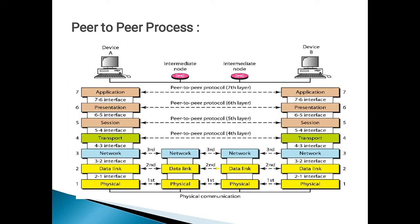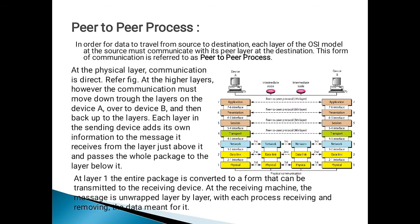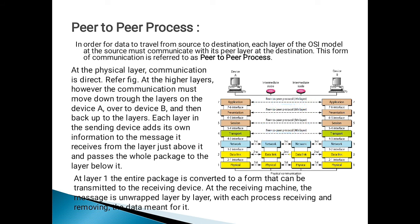Peer-to-peer process: what is a peer-to-peer process? This is a pictorial representation of the peer-to-peer process. When data travels from source to destination, each layer of the OSI model at the source must communicate with its peer layer at the destination. This form of communication is referred to as the peer-to-peer process. At the physical layer, communication is direct — communication is direct only at the physical layer.